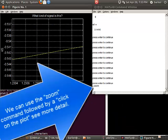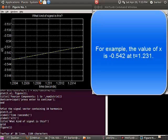We can use the ZOOM command, followed by a click on the plot to see more detail. For example, the value of X on the vertical axis is negative 0.542, and T on the horizontal axis is 1.23.